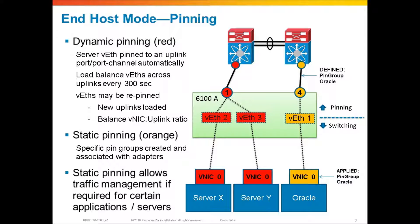By doing that, all of the traffic from this Oracle machine is going to use uplink number four. Meanwhile, the traffic from all the other servers, servers X and Y, will be using dynamic pinning and they will use uplinks that have not been applied to a static pin group. In this case, uplink number one is available for dynamic pinning. So we've got servers X and Y using uplink one and the Oracle machine using uplink number four, and we were able to segregate the traffic from the Oracle machine from the other servers.